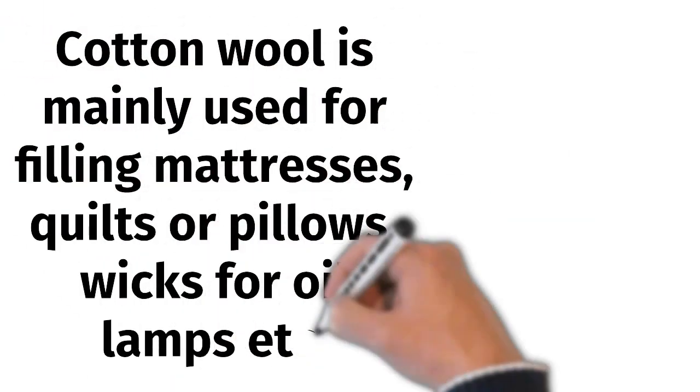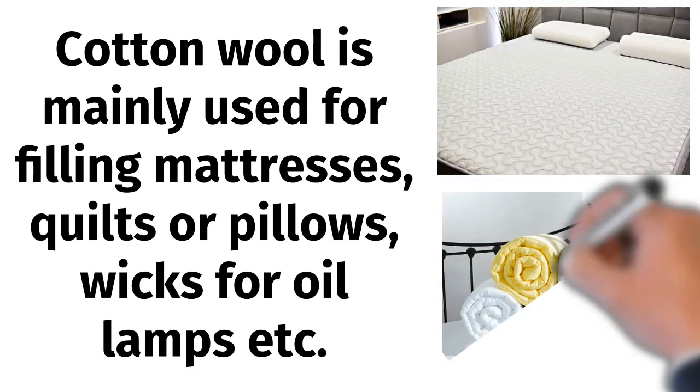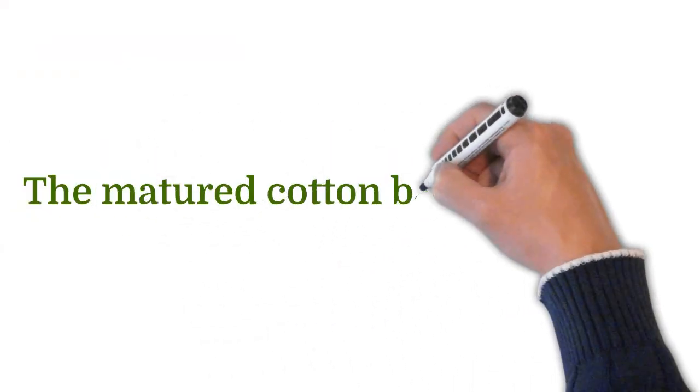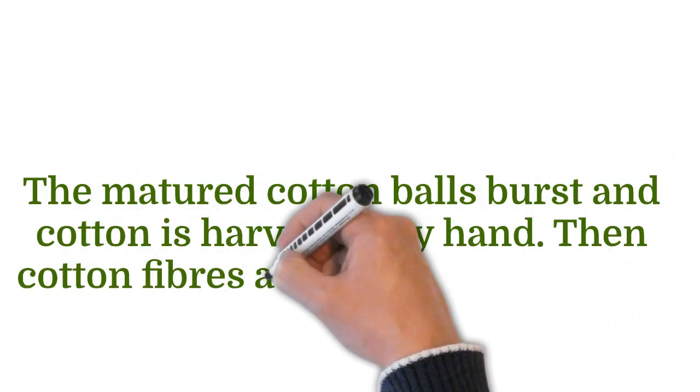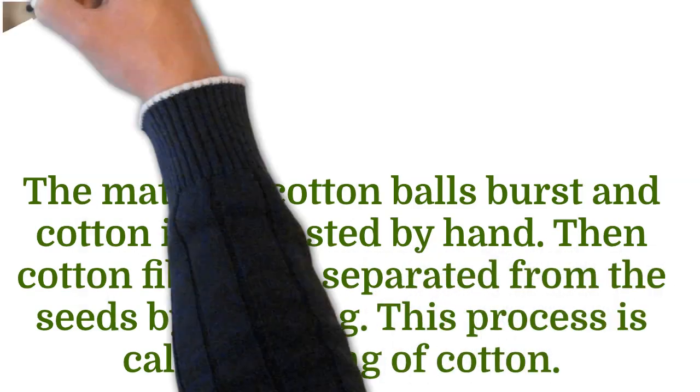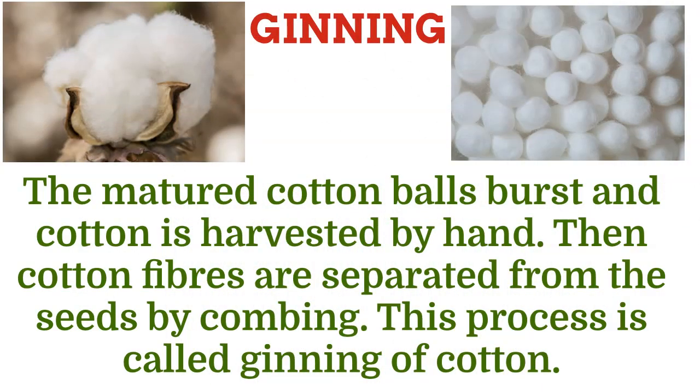Cotton wool is mainly used for filling mattresses, quilts or pillows, wicks for oil lamps, etc. The mature cotton balls burst and cotton is harvested by hand, then cotton fibers are separated from the seeds by combing. This process is called ginning of cotton.